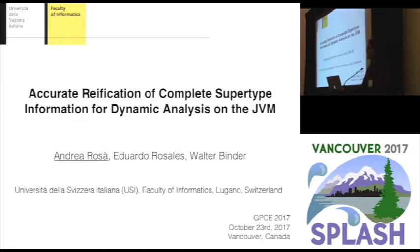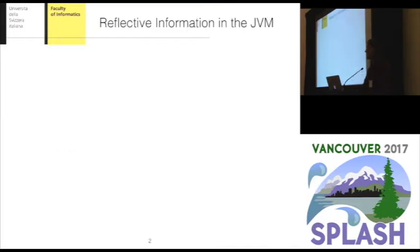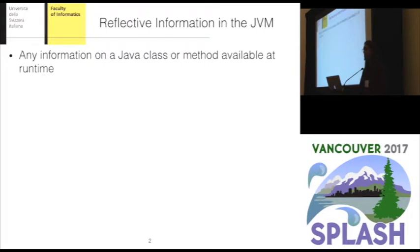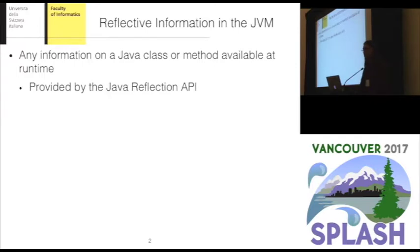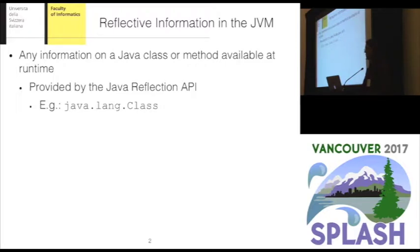Our work deals with reflective information in the Java machine. We consider reflective information as any information on a Java class or method that is available at runtime. This information is provided by the Java Reflection API. For example, reflective information on a Java class is embedded in the corresponding instance of a Java Lang class offered by the Java Reflection API.